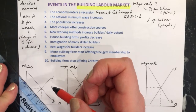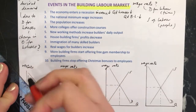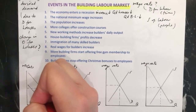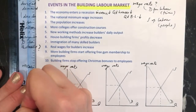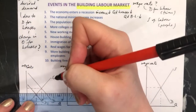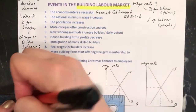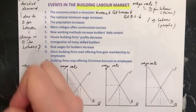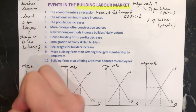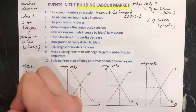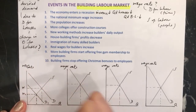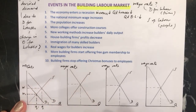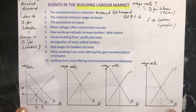So you do a parallel shift like this, put in your D1 nice and clearly, and put in your new equilibrium. You can see that your wage rate has gone from w to w1, and your quantity has gone from q to q1. So therefore, your wage has gone down.